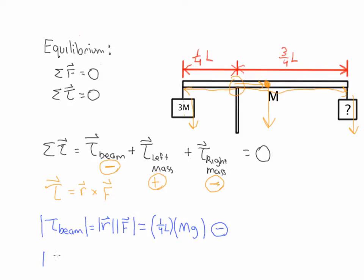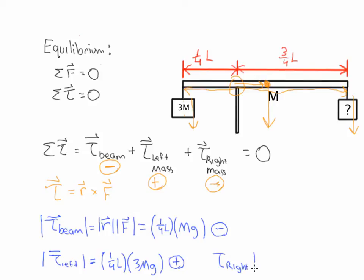The magnitude of the torque due to the left mass is R cross F. The radius vector is one-fourth L, and the mass is 3M, so the force is 3MG. This torque is in the positive (out of the screen) direction, giving plus three-fourths L times 3MG — wait, the radius to the left mass from the pivot is one-fourth L, so it's (1/4)L × 3MG. For the mystery mass on the right, it is a distance of three-fourths L from the pivot, so the torque magnitude is (3/4)L times little m times G, and this is in the negative direction, into the screen.